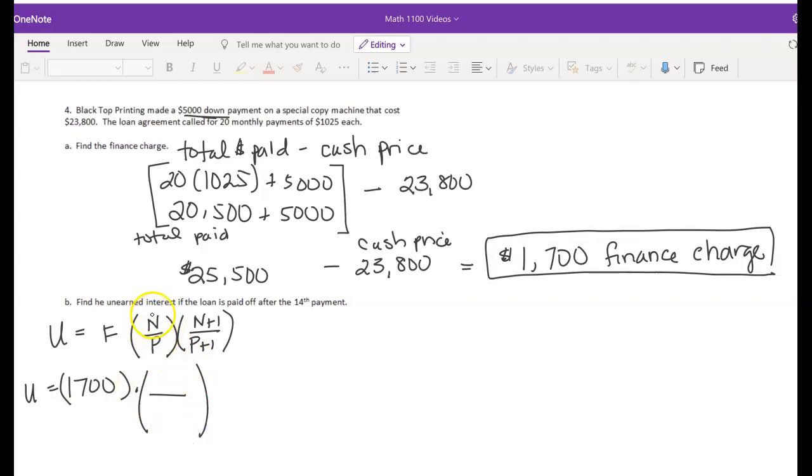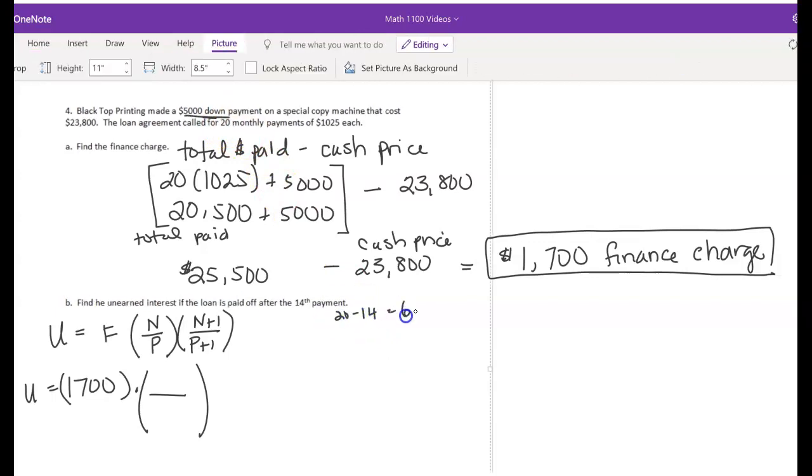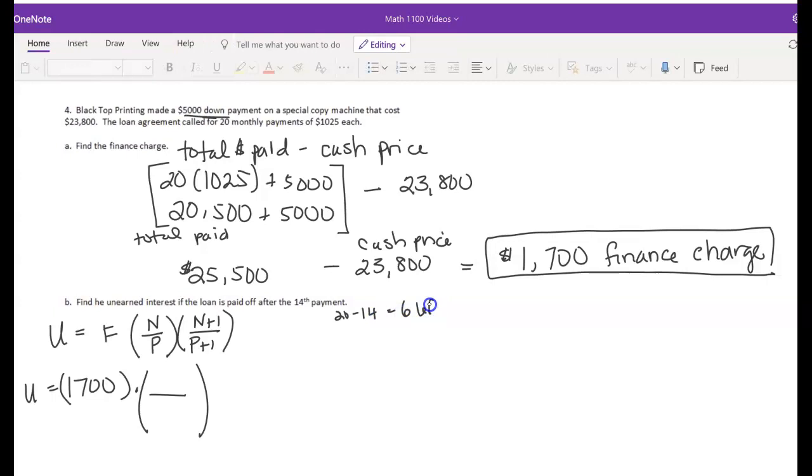For N, remember that N stands for the number of payments remaining. Well, if you paid it off after the 14th payment and there should be 20 total, 14, excuse me, 20 minus 14 is going to be six payments left. And that's going to be our N. There are six payments left to go.